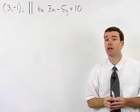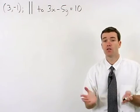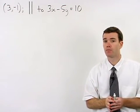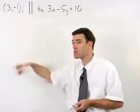To write the equation of a line, we need a point and a slope so that we can use the point-slope formula. Here we're given a point but we don't have a slope.